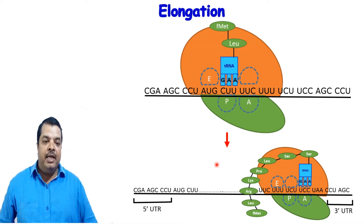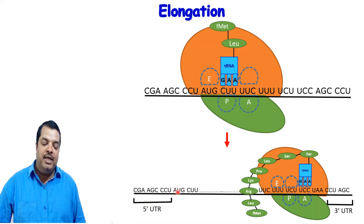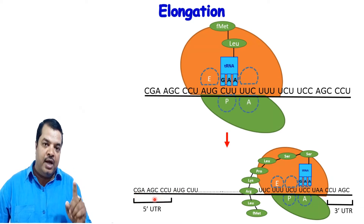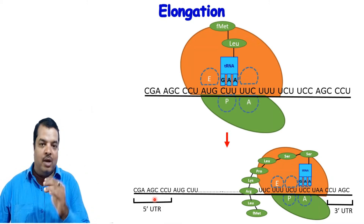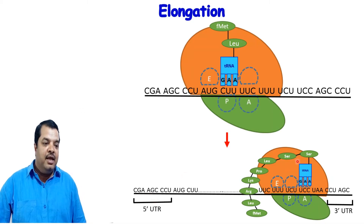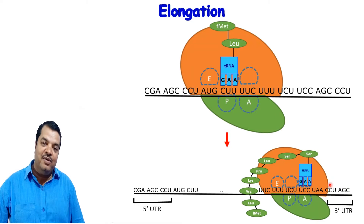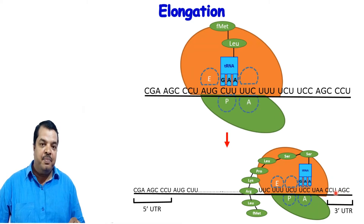The first thing is the 5' UTR — Untranslated Region. Before the AUG start codon, there are some regions that are untranslated. Since translation starts from AUG, the part before it is untranslated. Similarly, after the termination codon, there are also untranslated codons — this is called the 3' UTR or 3' Untranslated Region.